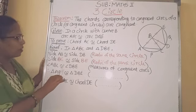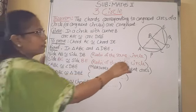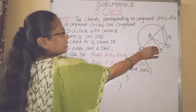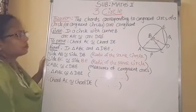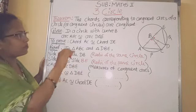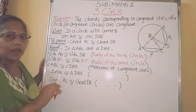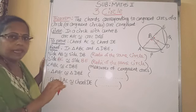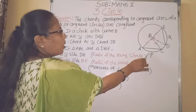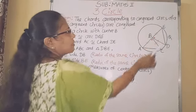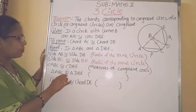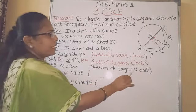Angle ABC is congruent to angle DBE. Observe the figure — angle ABC and angle DBE. The reason given is: measures of congruent arcs. Before this, we studied that if arcs have equal measure and equal radii, they are called congruent arcs. Since the arcs are given congruent, the measures of these central angles are also congruent. That is why we get angle ABC congruent to angle DBE.